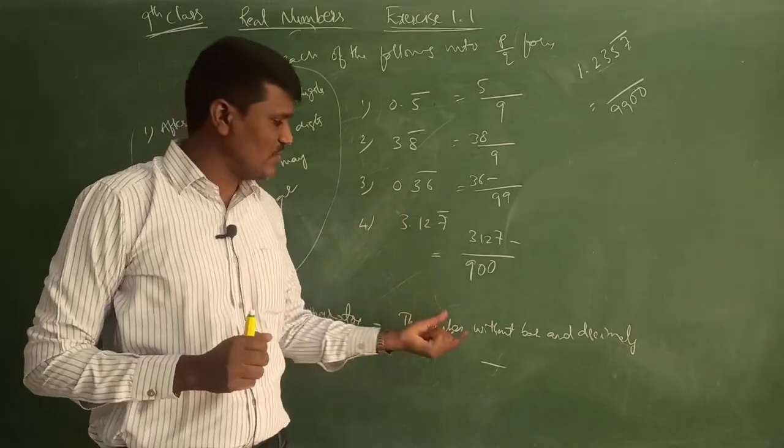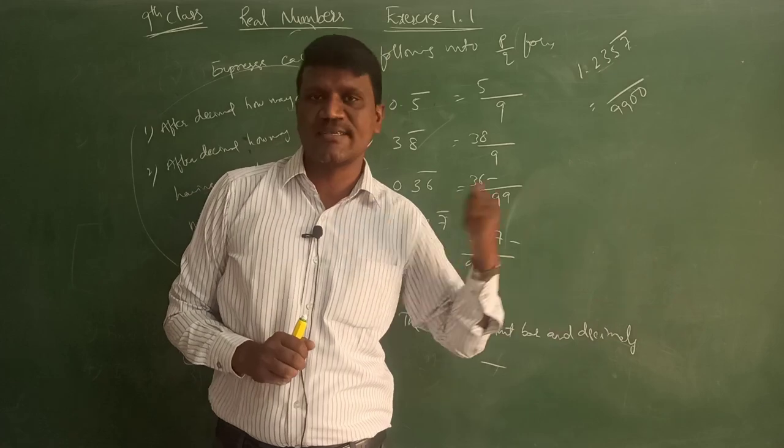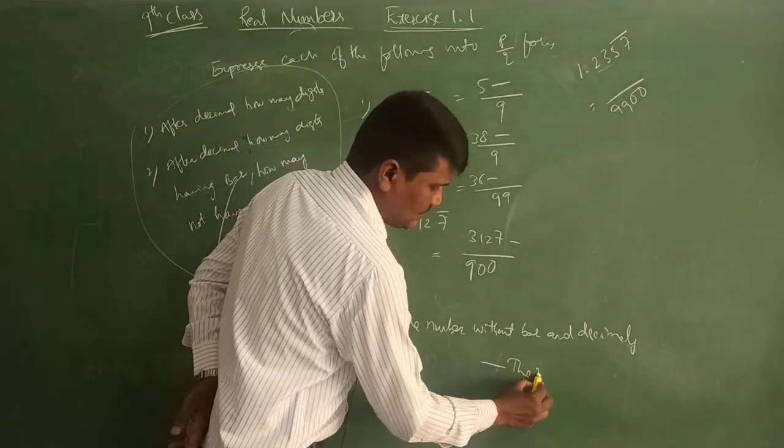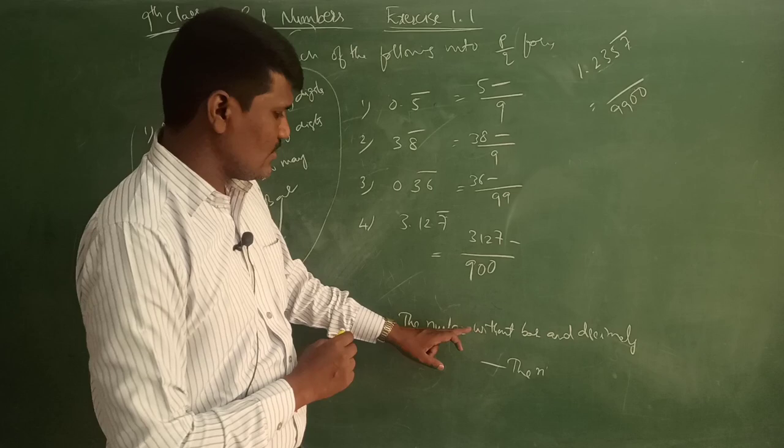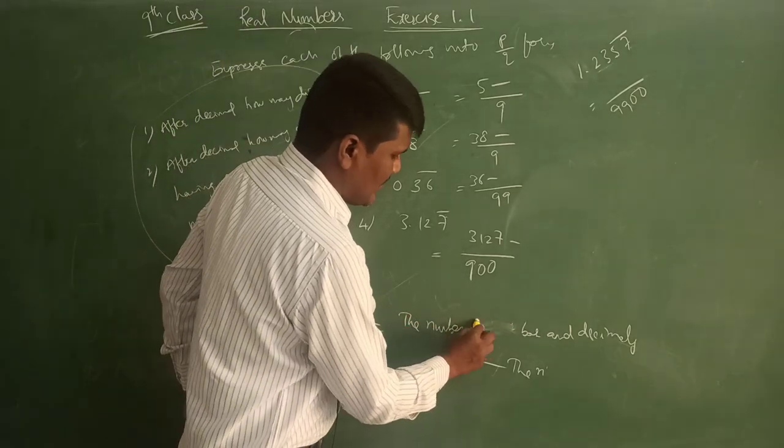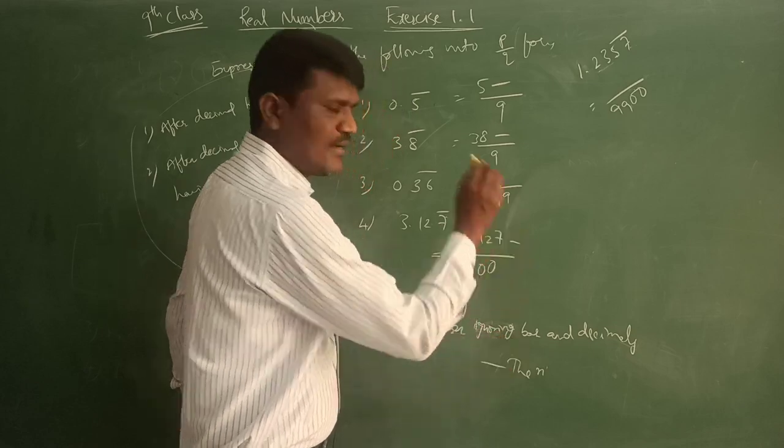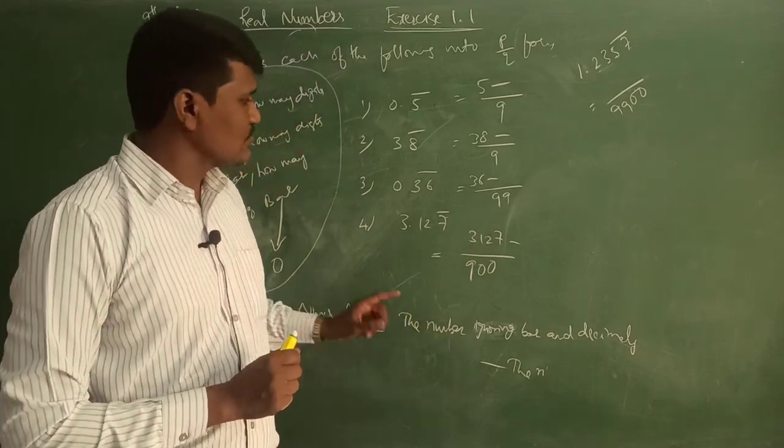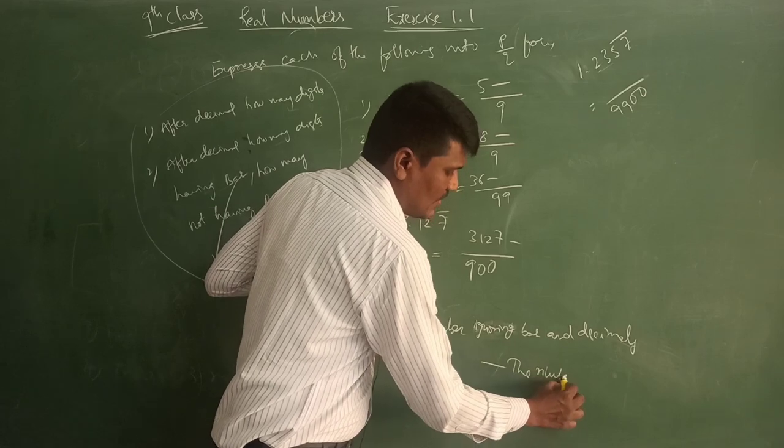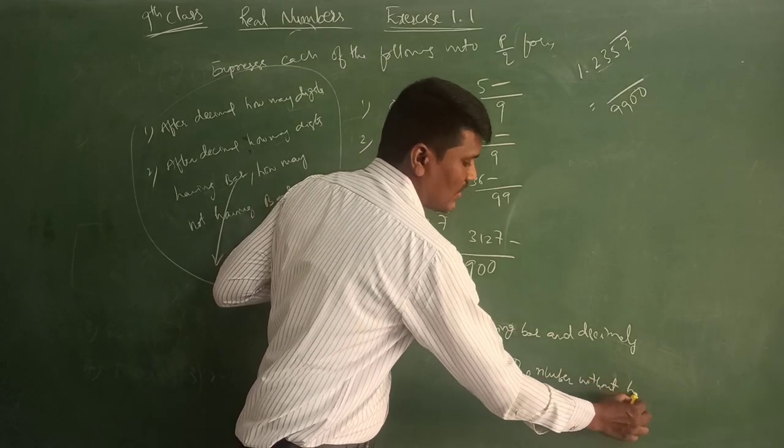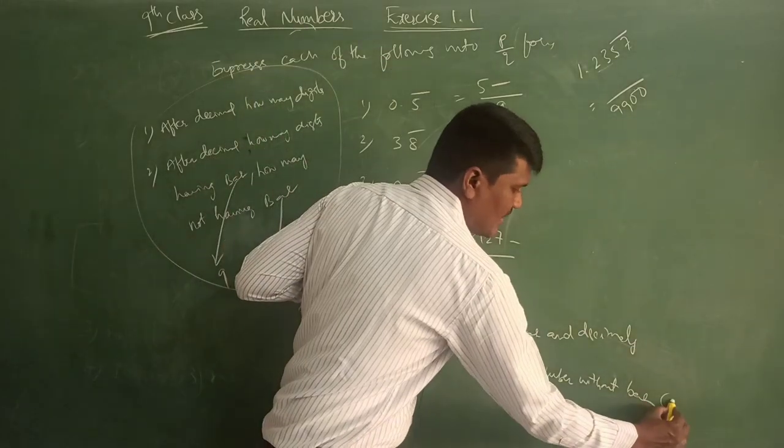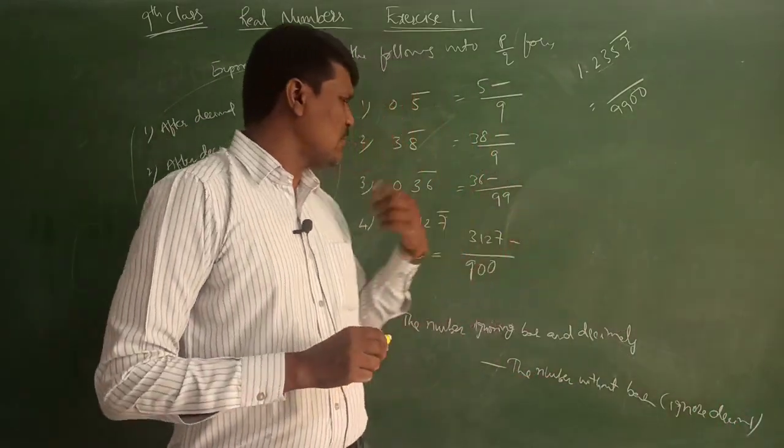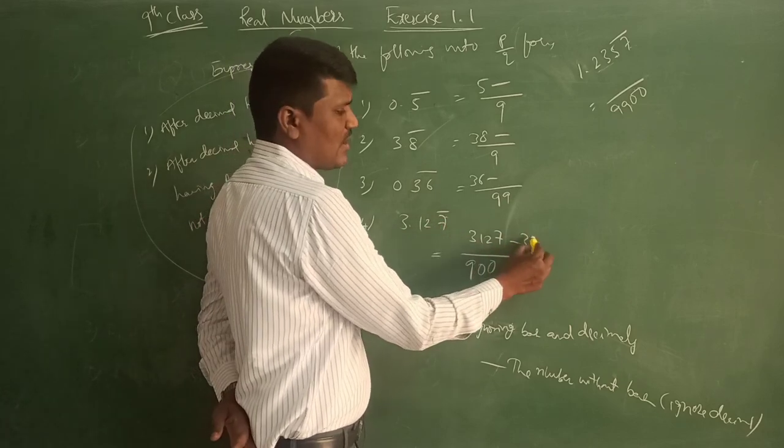Without bar and decimals, we should ignore bar and decimals. First, the number without bar and decimals minus - and the number ignoring bar and decimals. Ignore the total number. And the numerator denominator. Next, minus. And the number without decimal, without bar, ignoring the bar, ignoring the decimal.